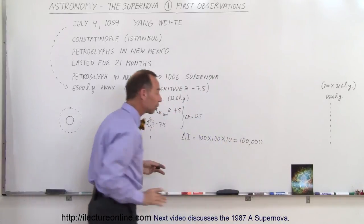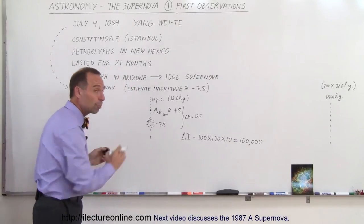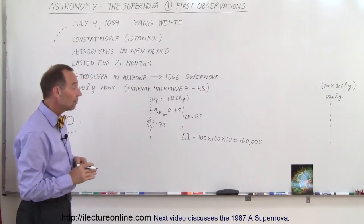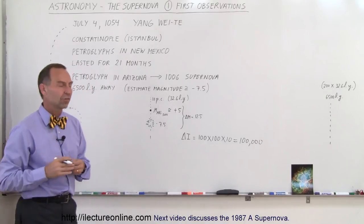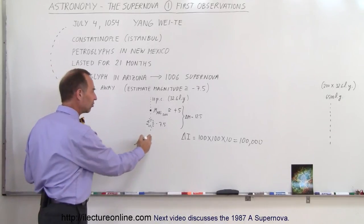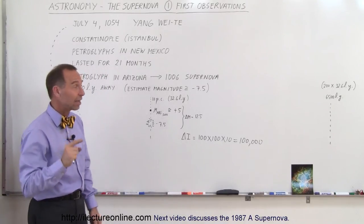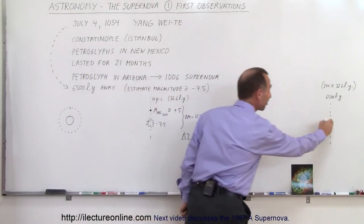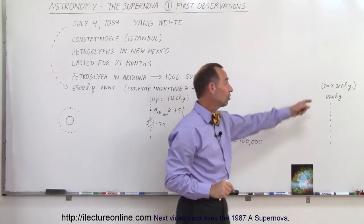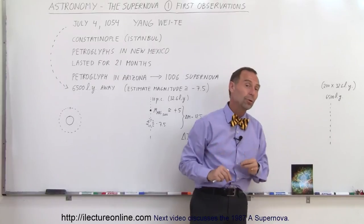So if this event had occurred at the distance of 32.6 light-years, it would have been 100,000 times as bright as the Sun. But it didn't happen at a distance of 32.6 light-years, it actually happened at a distance of 6,500 light-years, which is about 200 times 32.6 light-years.